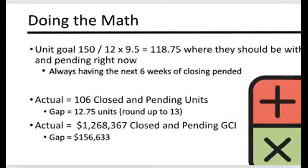Now we go back to our actual closed and pending. In my example, it's 90 closed and 16 pendings, which gives us a gap of 12.75 — we'll round that up to 13. Quick math: goal units 150, divided by 12, multiplied by 9.5, equals 118.75.